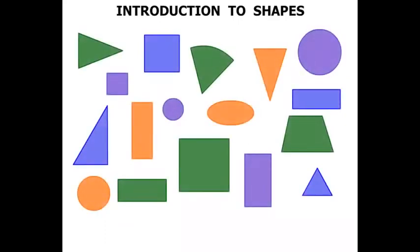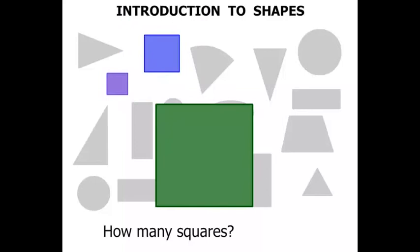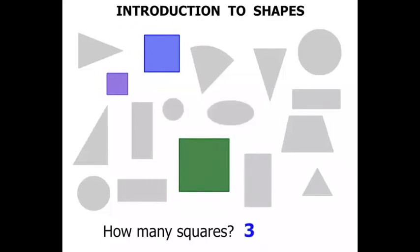Now we've got a whole bunch of different shapes there. And the first question is, how many squares? Well let's just look at the squares. We'll fade out everything else. So all we've got there are the squares that are colored. One, two, three. We've got three squares.